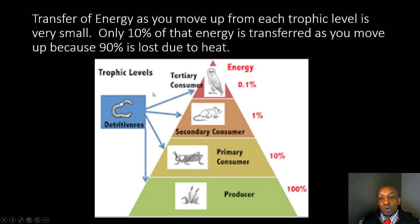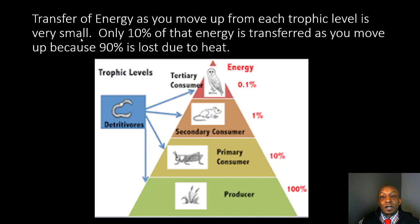Now let's look at the transfer of energy. As you move up each trophic level, only 10% of that energy is transferred because 90% is lost due to heat. So the producers have 100% of the energy, but this grasshopper, when it eats the grass, only receives 10% of that energy.